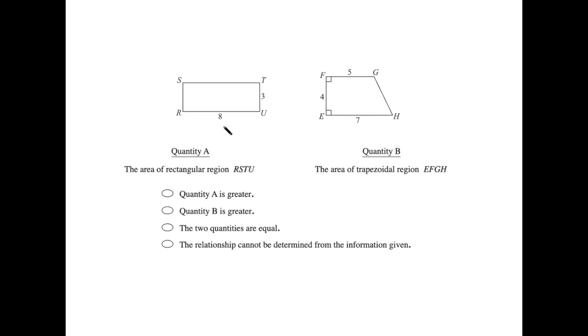Finding the area of a rectangle is very straightforward, probably the easiest formula in the history of formulas. It's just length times width, or base times height, whatever you want to call it. 8 times 3 gives us 24.